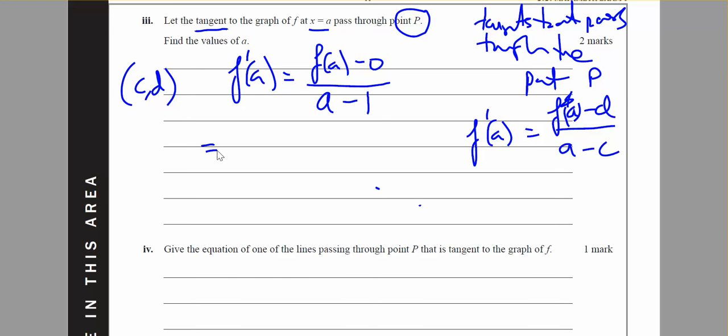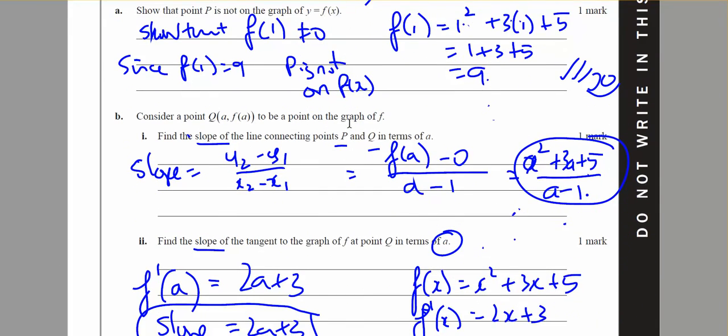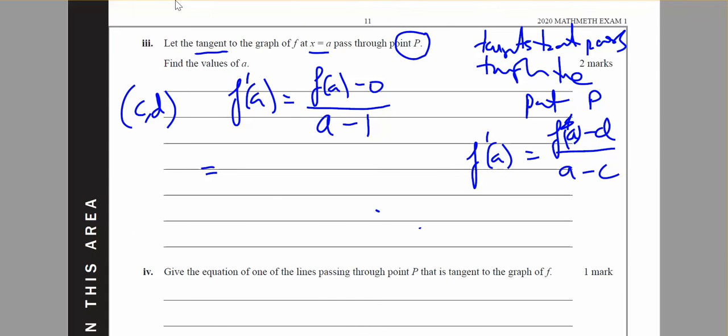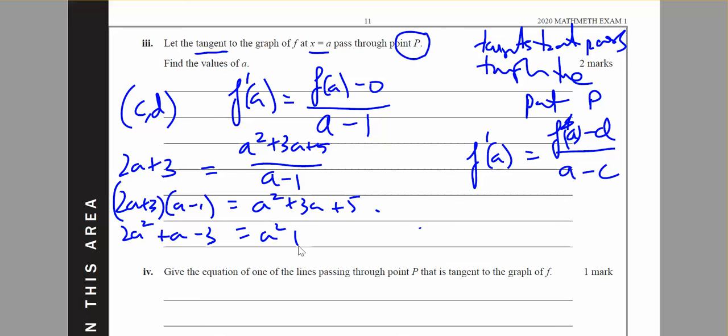So I'm going to have, find the values of a. So f dash of a I know because I just worked that out. And that's going to be 2a plus 3 is going to equal a squared plus 3a plus 5 over a minus 1. Multiplying both sides by a minus 1, I get 2a squared minus 2a plus 3a minus 3 equals a squared plus 3a plus 5. That will give me, move everything to the left, a squared minus 2a minus 8 equals 0. So I can factor this as a minus 4 times a plus 2. So a equals 4 or negative 2.